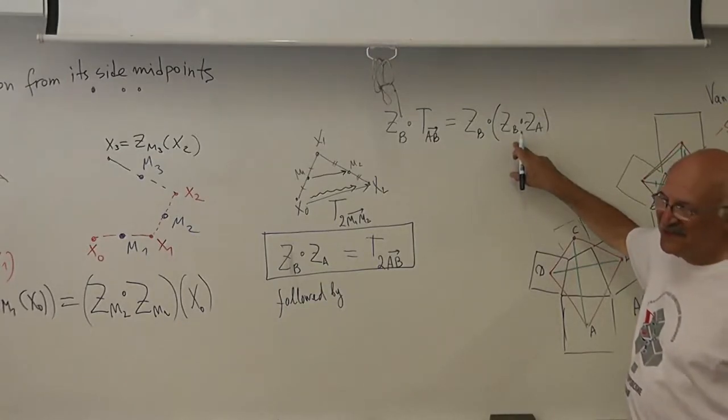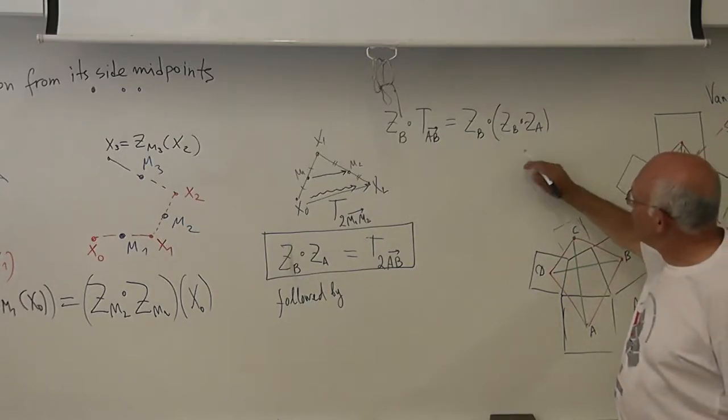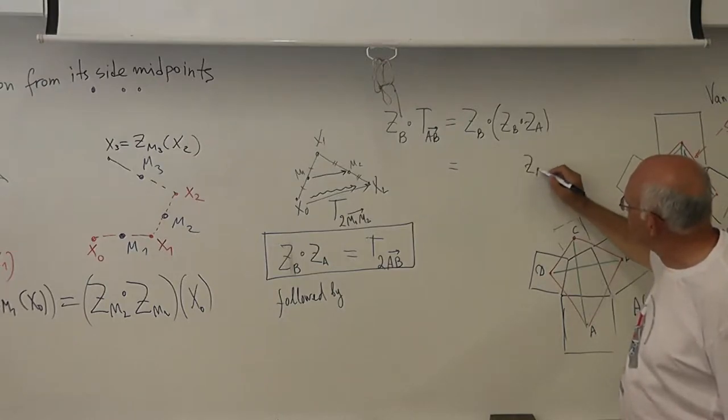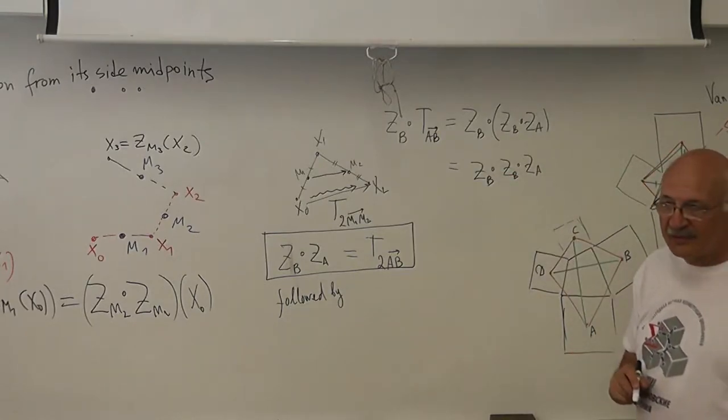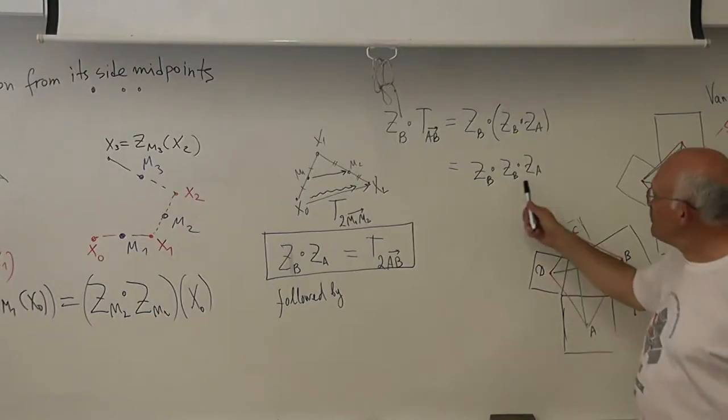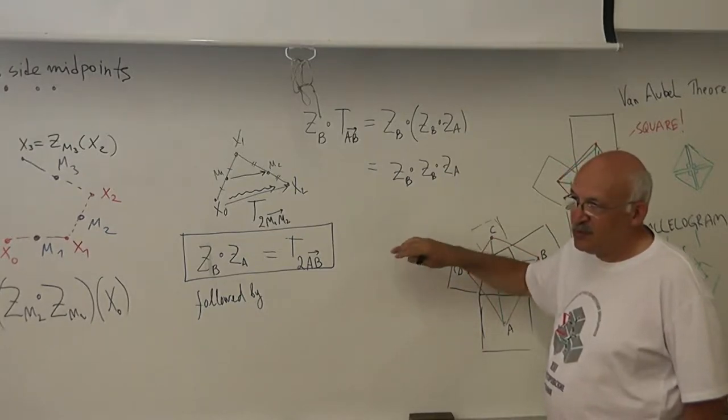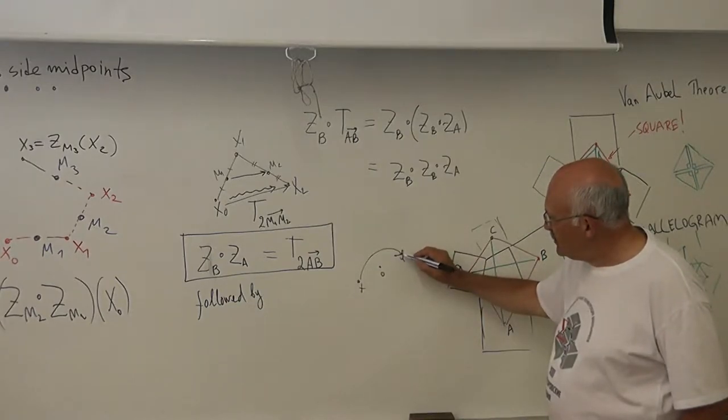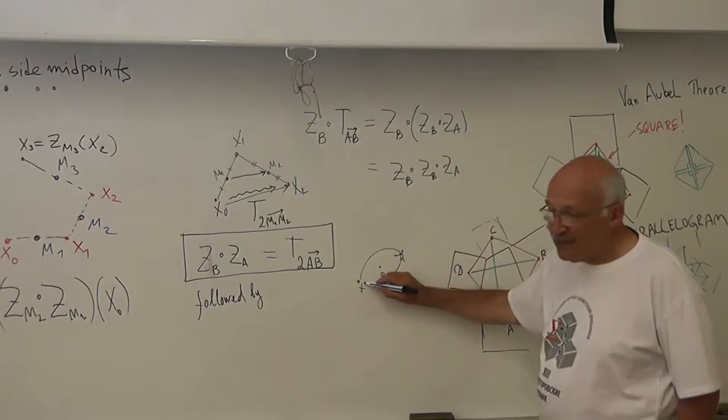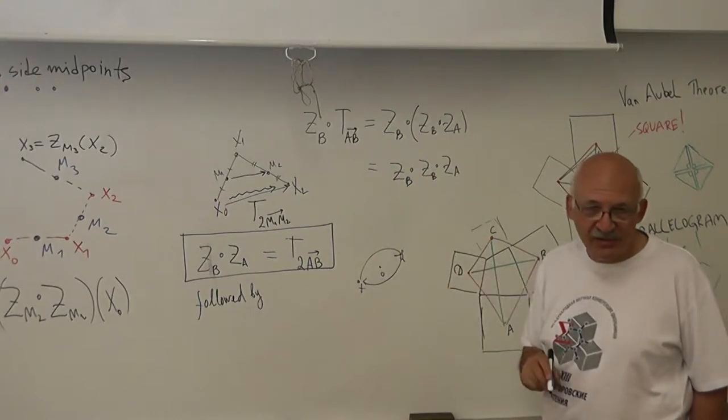Yes. So, TAB is ZA followed by ZB followed by ZA. It's the same as I perform first ZA, then ZB and then again ZA. Yes? You understand? Yes. But what happens if I perform the same central symmetry twice? This is ZA. So, I take a point, a symmetric point and then again the same symmetry. Nothing happens.